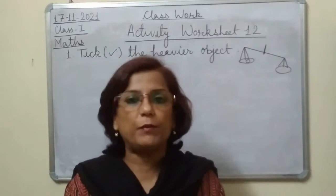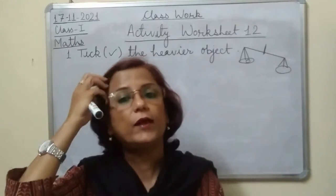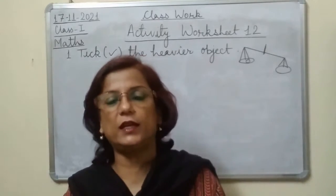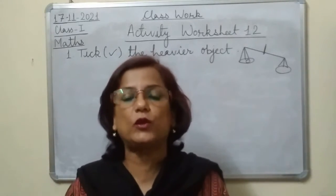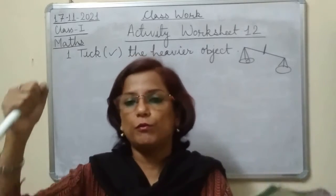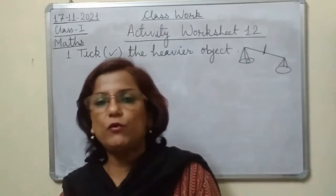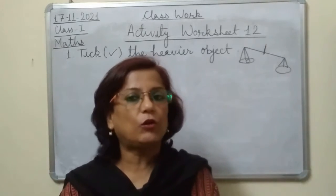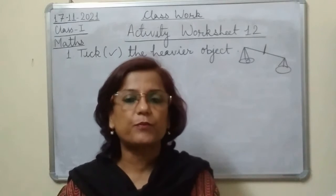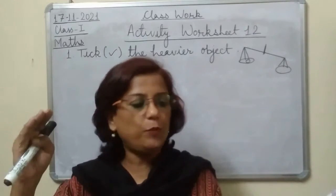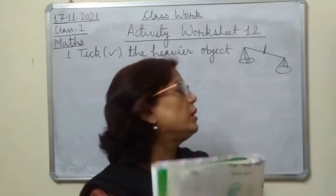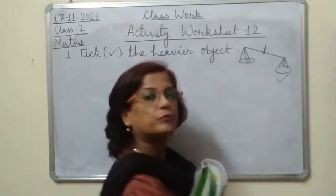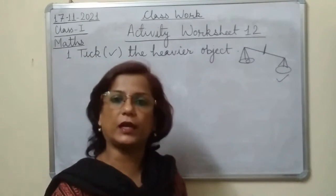Until the pan is not equal, you will keep adding. You will see which side goes down, like a see-saw. The side which has more pressure goes down — so you have to identify the heavier object. The side which is lower is heavier, so here we will put a tick on that side.